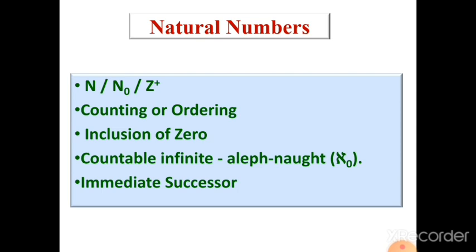They are called natural numbers because they are numbers we see in nature — we can see one, two, three. Everything in nature that we want to count exists as natural numbers. We cannot see 1.5 or 2.5 in nature; we can create them, but they do not naturally exist. These numbers are used for counting and ordering, which are two different concepts: counting means counting a group of objects 1, 2, 3, while ordering means placing them as 1st, 2nd, 3rd.